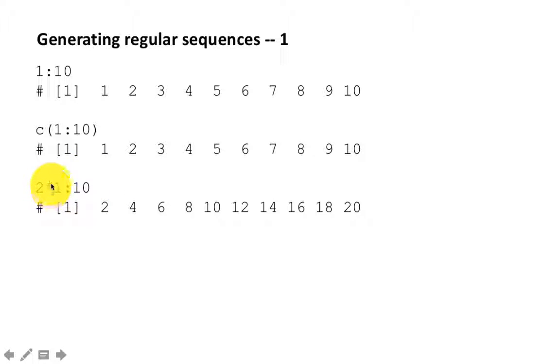So even though the multiplication operator comes first, R is going to do the colon operator first because that has precedence. So it's first going to create the sequence 1 to 10 and then multiply that sequence by 2, which means multiplying every element by 2. And that's what the result is.